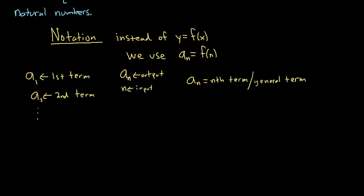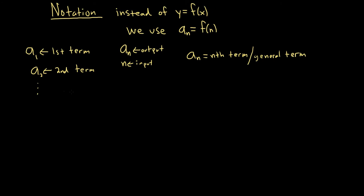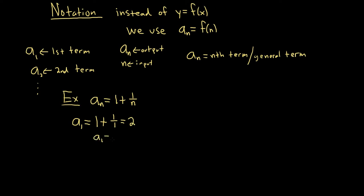Let's do a simple example of writing the first few terms of a sequence defined by a formula. Say we have a_n = 1 + 1/n. Since the definition doesn't tell us where n starts, we assume we start at 1. So a_1 means replacing all the n's with 1: we get 1 + 1/1, which is 1 + 1 = 2. So a_1 = 2 is the first term of our sequence.